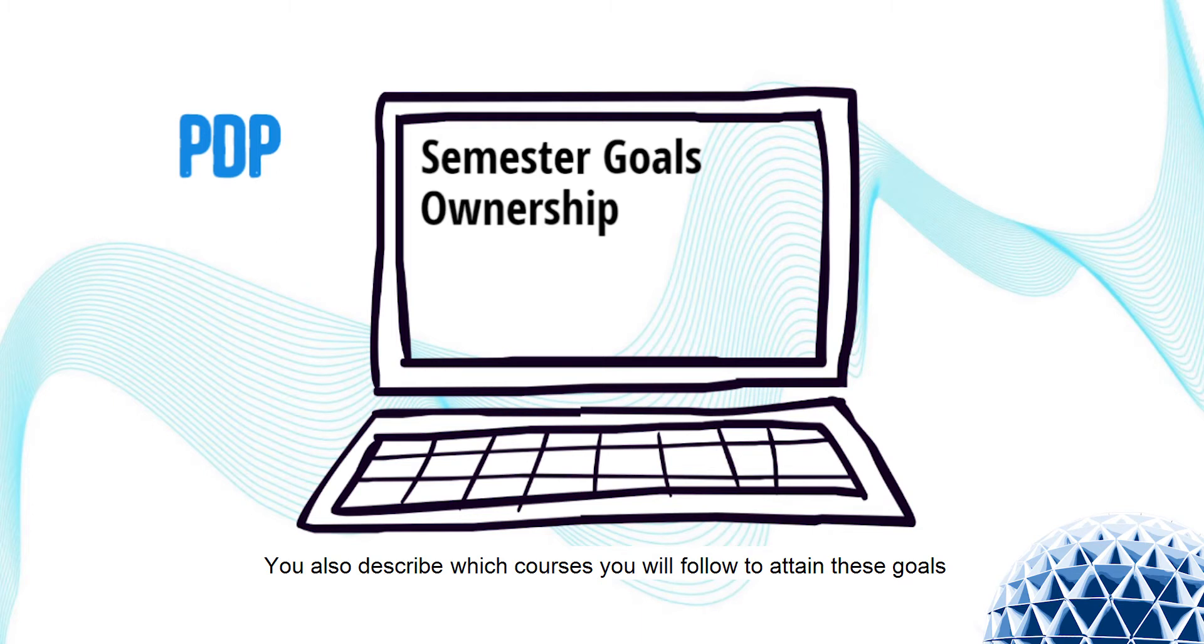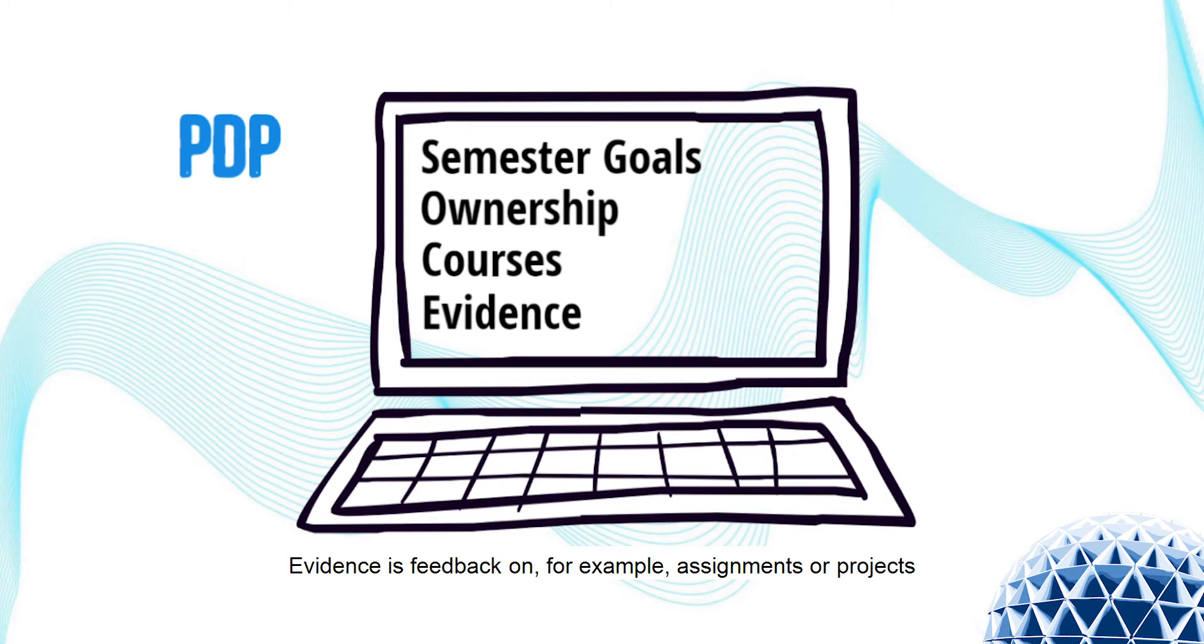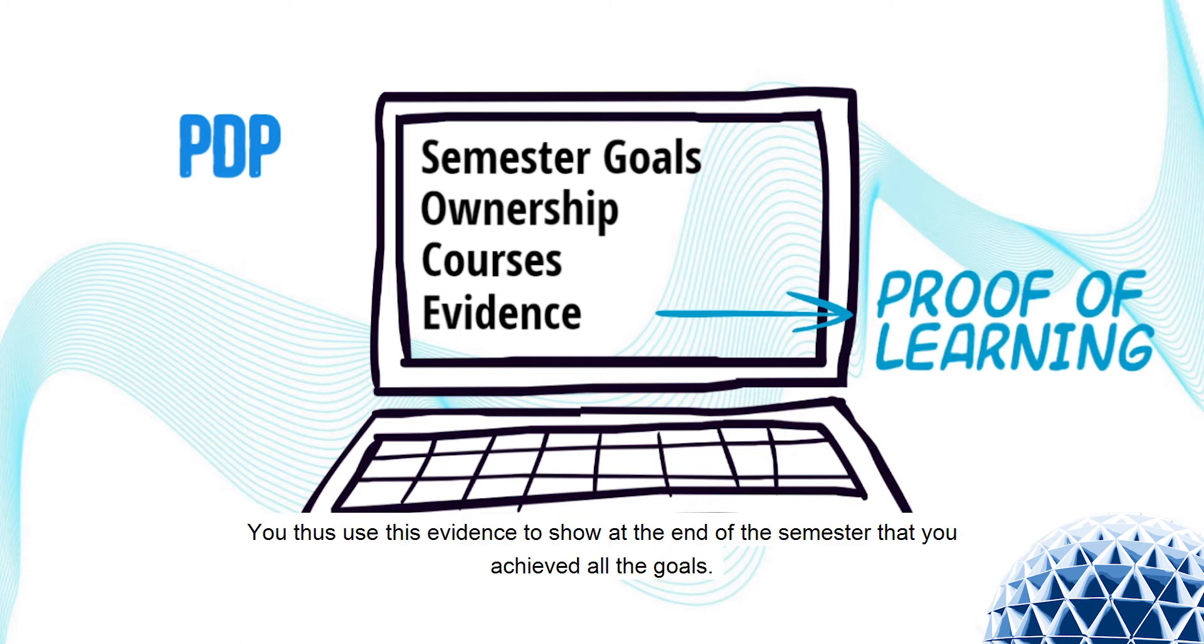You also describe which courses you will follow to attain these goals and how you will collect evidence. Evidence is feedback on, for example, assignments or projects you worked on during your courses and it forms proof of your learning. You use this evidence to show at the end of the semester that you achieved all of the goals.